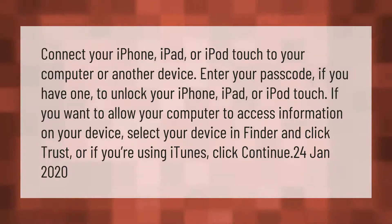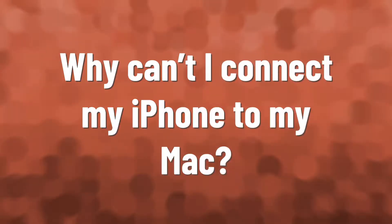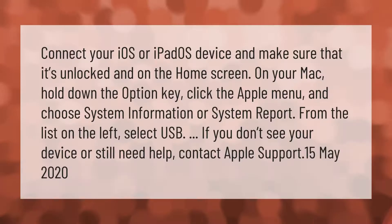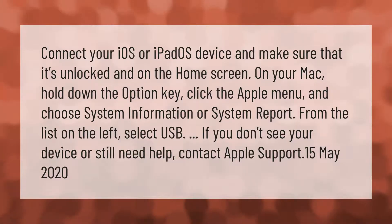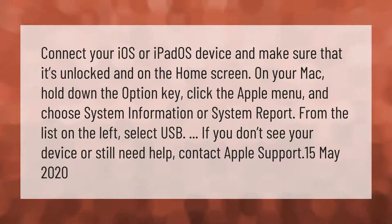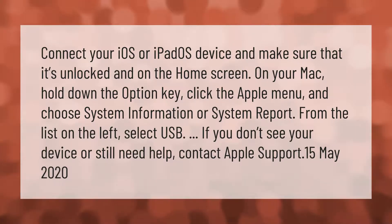Connect your iOS or iPadOS device and make sure that it's unlocked and on the home screen. On your Mac, hold down the Option key, click the Apple menu, and choose System Information or System Report. From the list on the left, select USB. If you don't see your device or still need help, contact Apple Support.